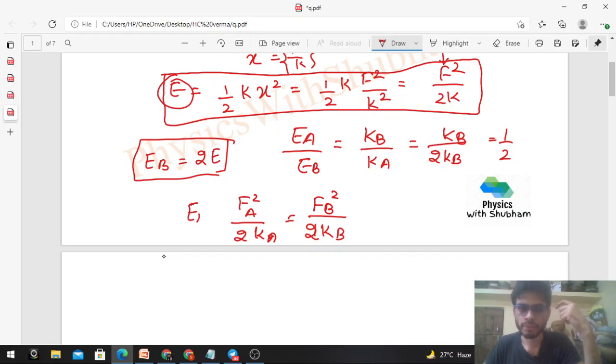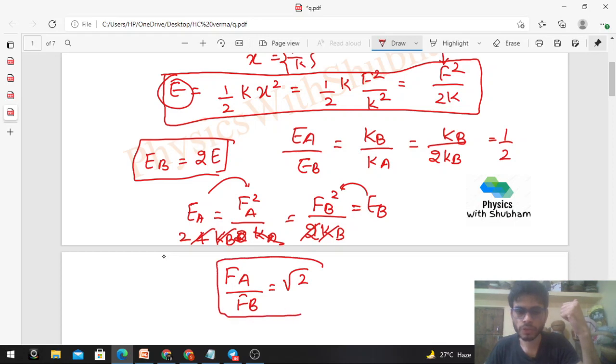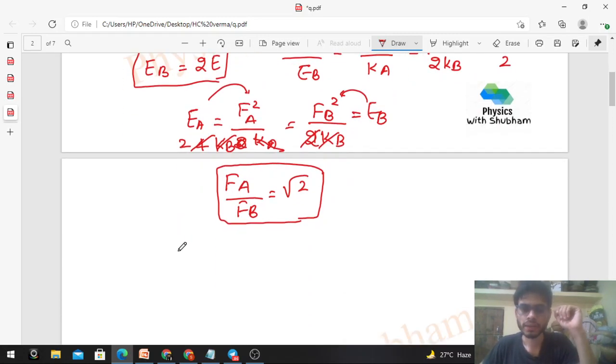Energy same rahegi toh maine jo EA hoga that will be FA upon twice of KA aur jo EB hoga dono ko equate kar diya, right? Ye dono ko maine equate kar diya. So yahan se again aap dekho, KB kitna hoga? KA de rakhaya na, twice of KB. So KA ko agar maine twice of KB put karta hoon, so yoh four times of KB ho gaya aur KB again cancel ho jayega na aur two se yoh four cancel ho jayega two times. So FA by FB ka jo ratio aa raha hai that is root two. So FA me jo force laga hoge woh root two times of FB. Jo spring second wali hai us mein hum jo force laga rahe hai uska root two times aapko first wali spring me lagana padega, then aapki jo elastic potential energy aayegi dono spring me same aayegi.